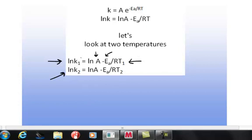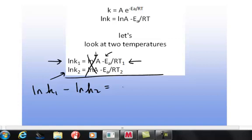So what you do is you just manipulate these equations by subtracting the two equations to form a new equation that's going to include both K1, T1, K2, and T2. And that way you get the natural log of K1 minus the natural log of K2 equals the natural log of A minus the natural log of A goes to zero. So then it just equals negative Ea over RT1 minus negative Ea over RT2, minus the minus.